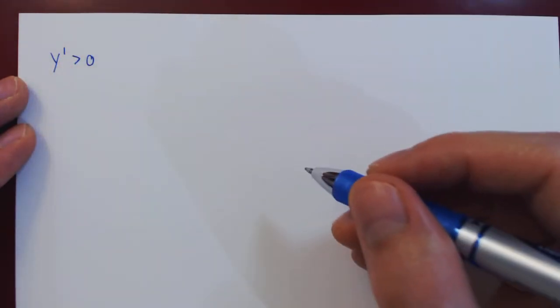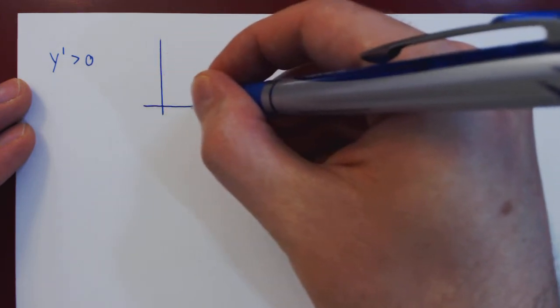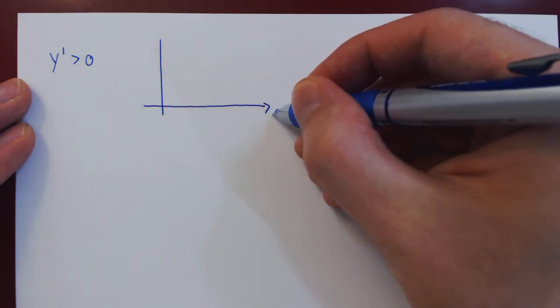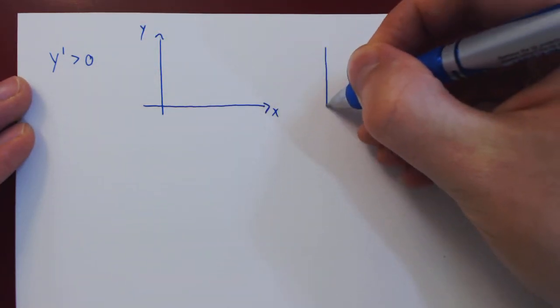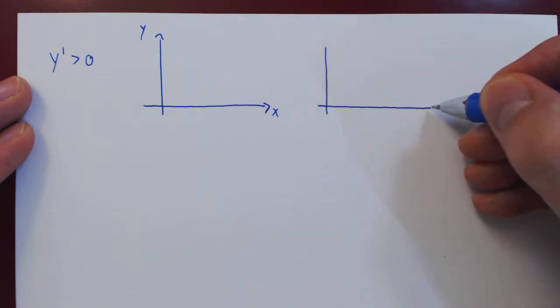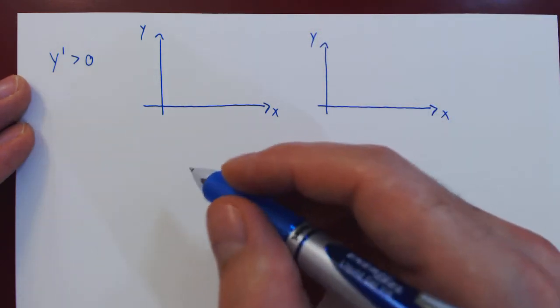In this video we want to look at what kind of information is provided by the first derivative about the graph of a function. Suppose that we look at a function that has a positive derivative. We know that if the derivative of a function is positive, then the function is increasing, but that's not enough to provide an accurate sketch of the graph of the function, because the function could be increasing in two different ways.